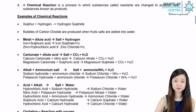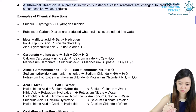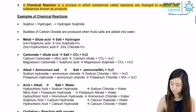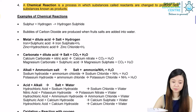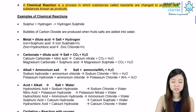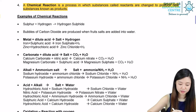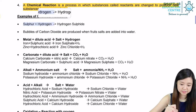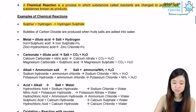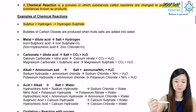Let's now look at chemical reactions. A chemical reaction is a process in which substances called reactants are being changed to produce new substances called products. For example, sulfur plus hydrogen gives you hydrogen sulfide. Sulfur and hydrogen are the reactants, and hydrogen sulfide is the product.